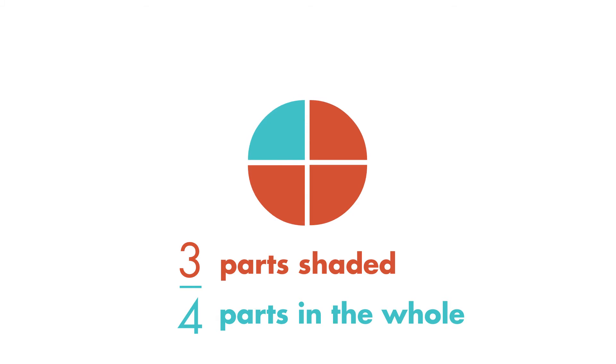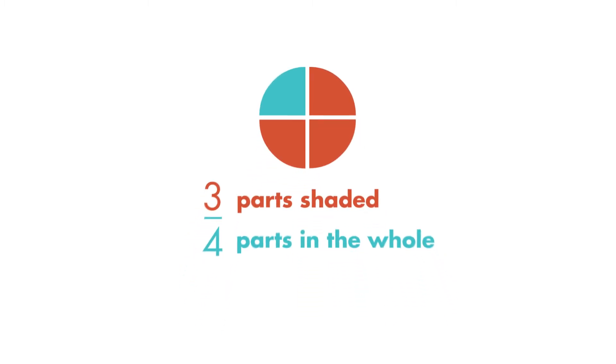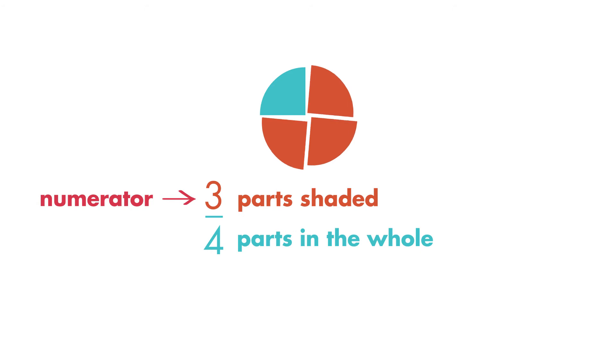The parts of a fraction have names. The numerator is the top number of a fraction. It tells the number of parts that are shaded. This numerator is three.